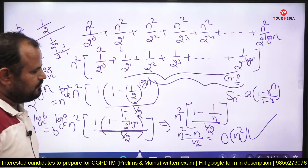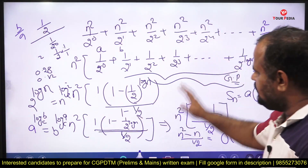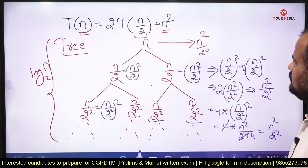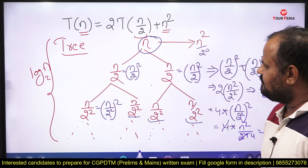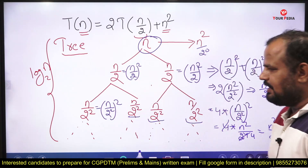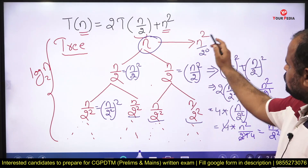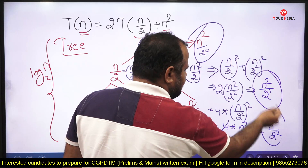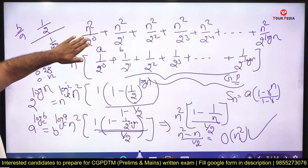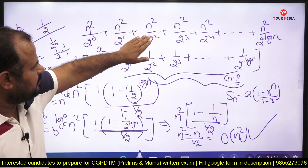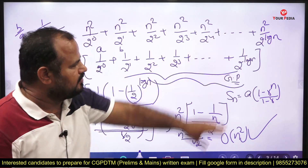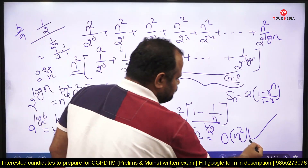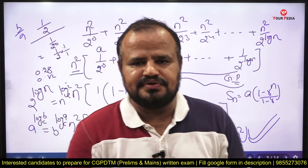The solution for this recurrence relation is O(n²). You must write each and every step including the formulas used. To summarize: start with a problem of size n, divide into two parts of size n/2, find total cost at each level to get the series n²/2⁰ + n²/2¹ + n²/2² + ..., take n² common, apply the GP sum formula, and you get O(n²). This problem should take about 5 to 6 minutes to solve.